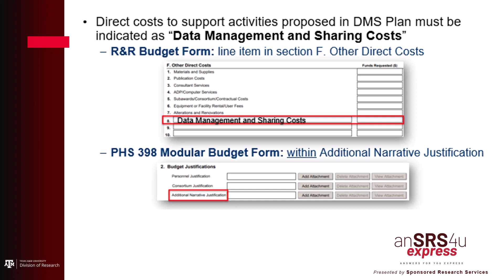The bottom example reflects a PHS 398 modular budget form. For an application using the modular budget, use the additional narrative justification in the PHS modular budget form and include a section clearly labeled Data Management and Sharing Justification, followed by the requested dollar amount. If no costs will be incurred, enter zero for the requested dollar amount. Also include a brief justification of the proposed activities that will incur cost.